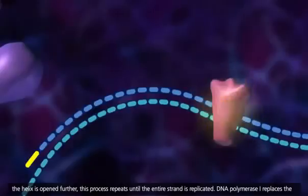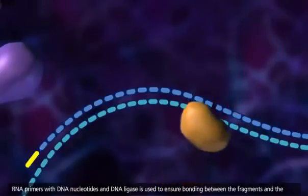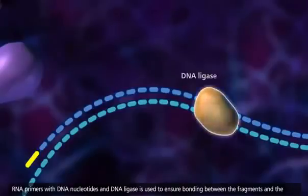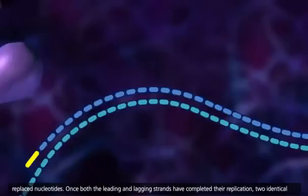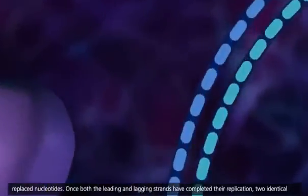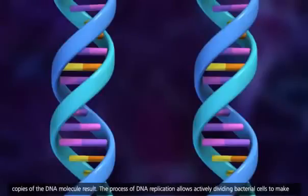DNA polymerase 1 replaces the RNA primers with DNA nucleotides, and DNA ligase is used to ensure bonding between the fragments and the replaced nucleotides. Once both the leading and lagging strands have completed their replication, two identical copies of the DNA molecule result.